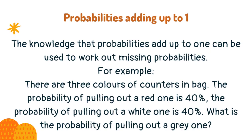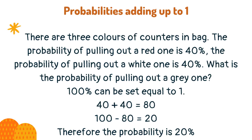The knowledge that probabilities add up to one can be used to work out missing probabilities. For example, there are three colors of counters in a bag. The probability of pulling out a red one is 40%, the probability of pulling out a white one is 40%. What is the probability of pulling out a gray one? 100% can be set equal to 1. 40 plus 40 equals 80, and 100 minus 80 equals 20, therefore the probability is 20%.